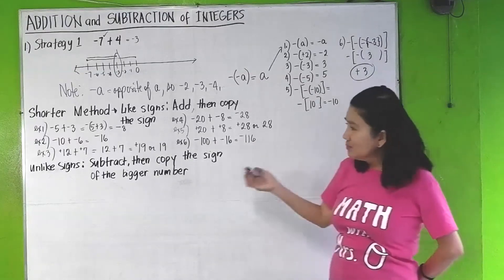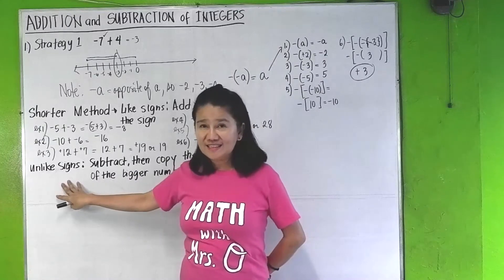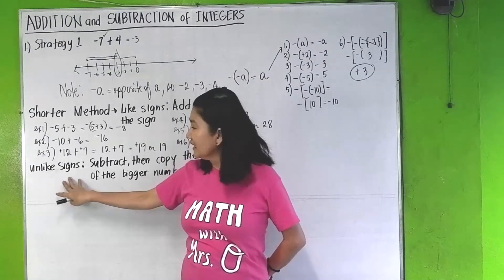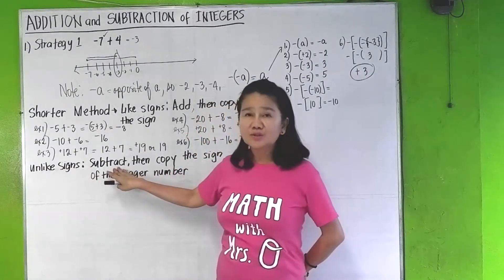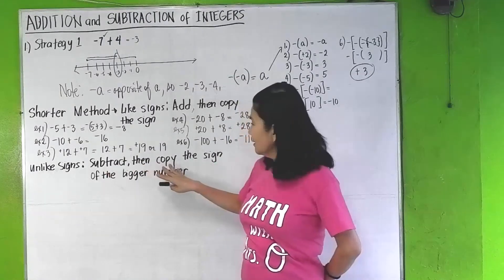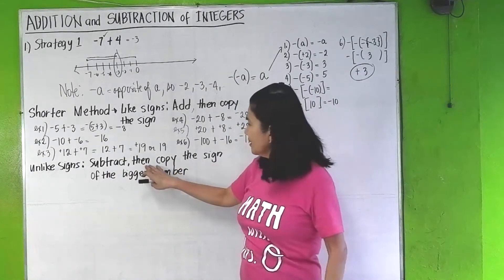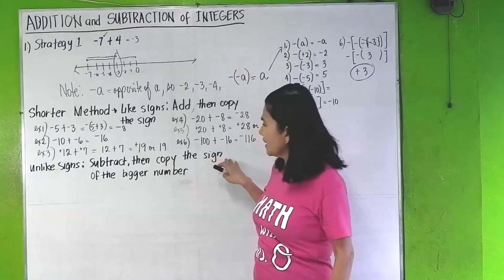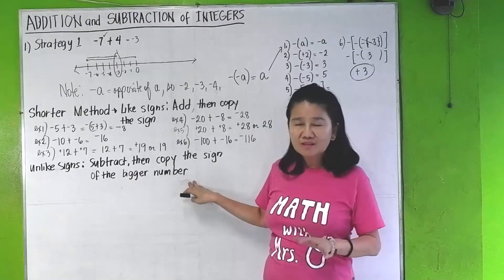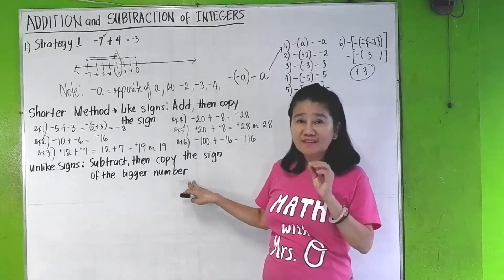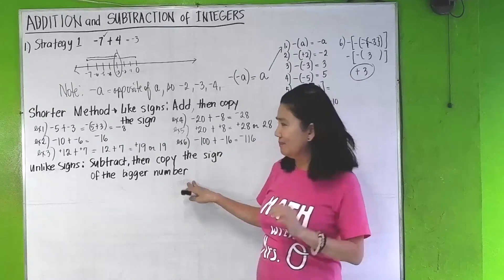Now let's move on to unlike signs. For unlike signs, the rule is: subtract — ignore the signs and subtract — then copy the sign of the bigger number.